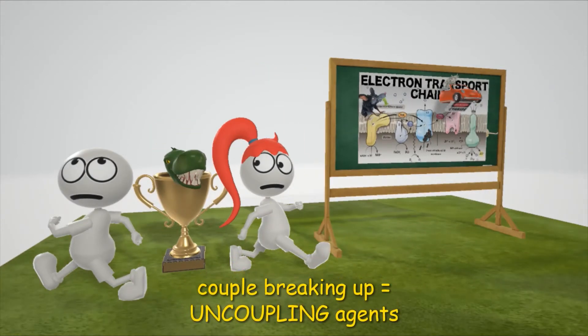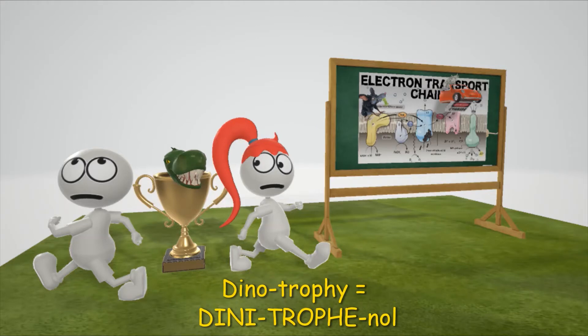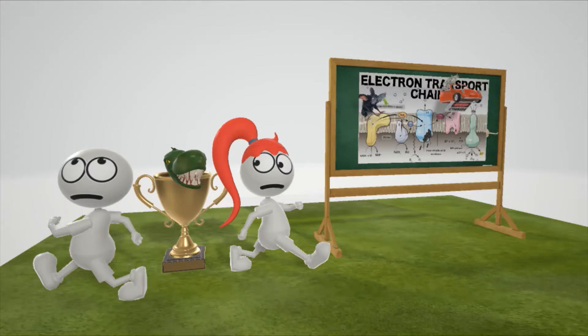Here we have a couple that's breaking up to help us remember uncoupling agents. The one which we need to remember is 2,4-dinitrophenol, represented by the dinotrophy. Dinotrophy for dinitrophenol, which is used illicitly for weight loss.